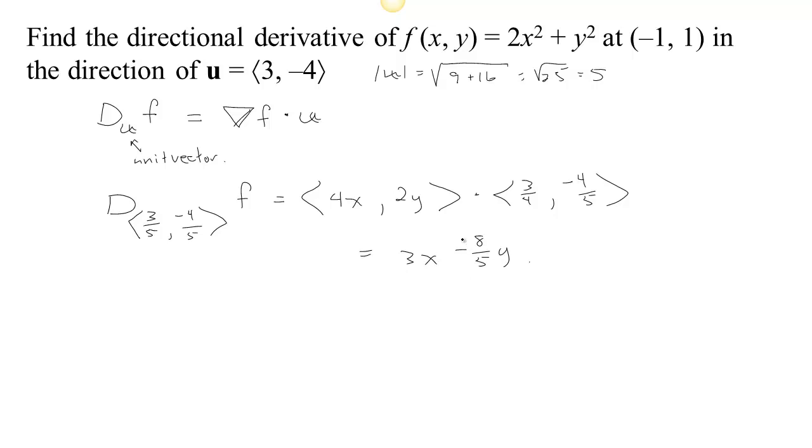So given some point x and y, this gives us the slope in the direction of u at that particular point. In our case, we're told to find it at the point x0, y0, x0 is negative 1 and y0 is 1. So at our particular location, we want the derivative of f in the direction of u at (-1, 1), then we plug in negative 1 for x and positive 1 for y. And we're going to get negative 3 minus 8 fifths. Negative 15 fifths minus 8 fifths would be negative 23 fifths. We've got our directional derivative.